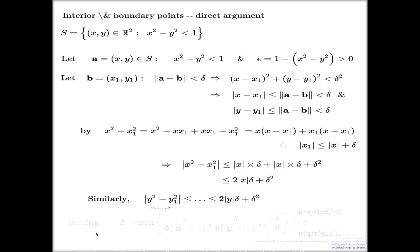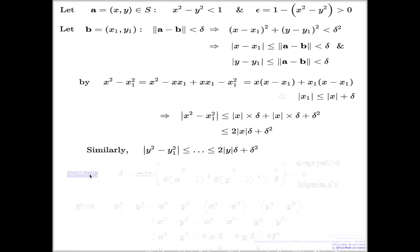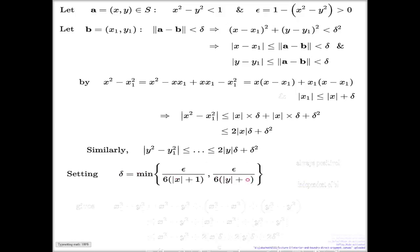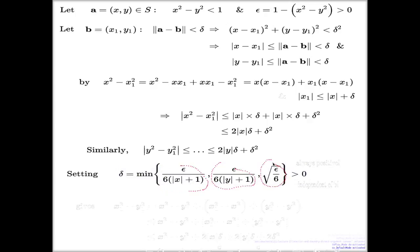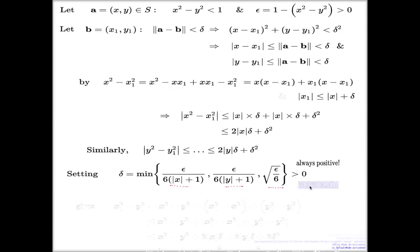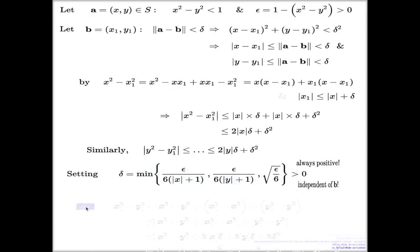Now the time has come to make a choice for delta. We took two points A and B at distance delta and postponed the choice of delta while we did estimates for the difference of squares. Now I choose delta as the minimum of three numbers. This is an important choice: it's always positive because every component is positive, and it is independent of the point B — B doesn't appear here, only the components of point A.